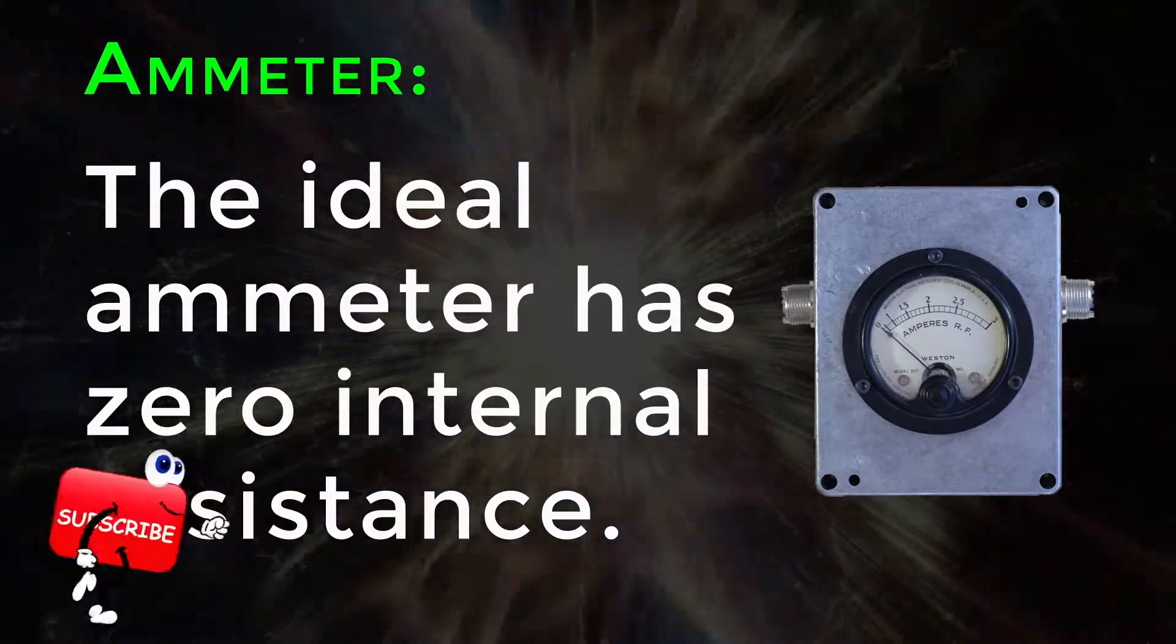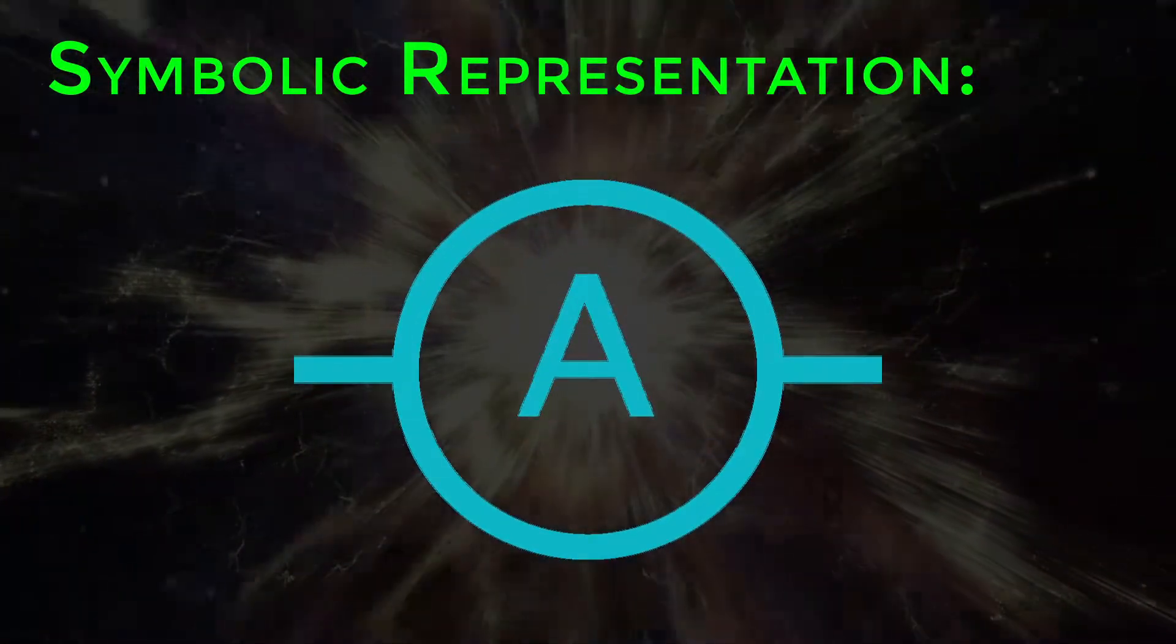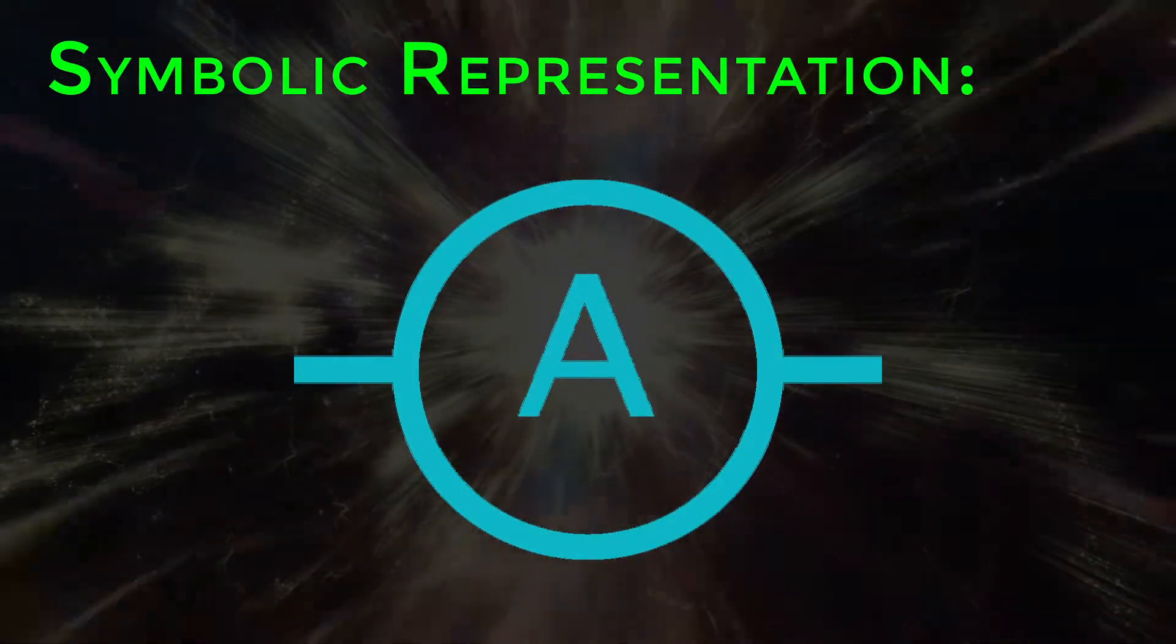An ideal ammeter has zero internal resistance. For symbolic representation, the capital alphabet A represents the ammeter in the circuit.